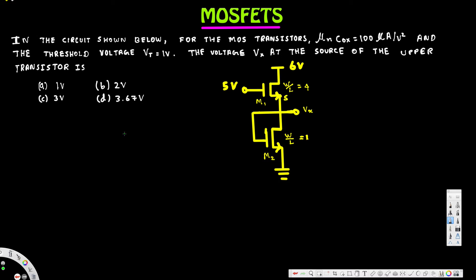Let's look at this problem. For the circuit shown, the transistors have μnCox equal to 100 microamperes per volt squared, threshold voltage Vt equal to 1 volt. We need to find the voltage Vx at the source of the upper transistor. The options given are 1V, 3V, 2V, and 3.6V.